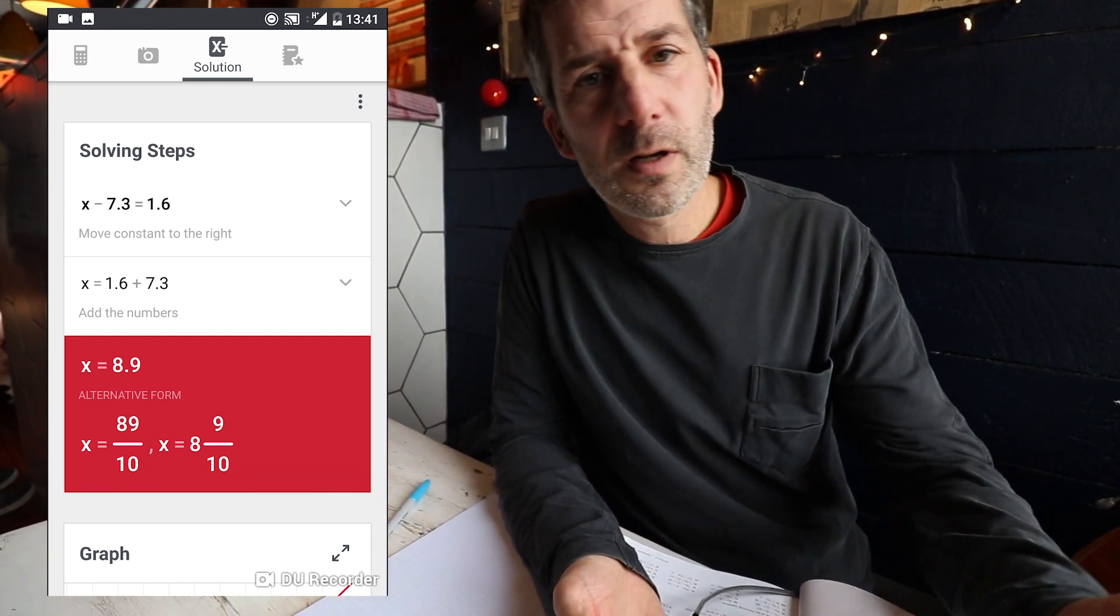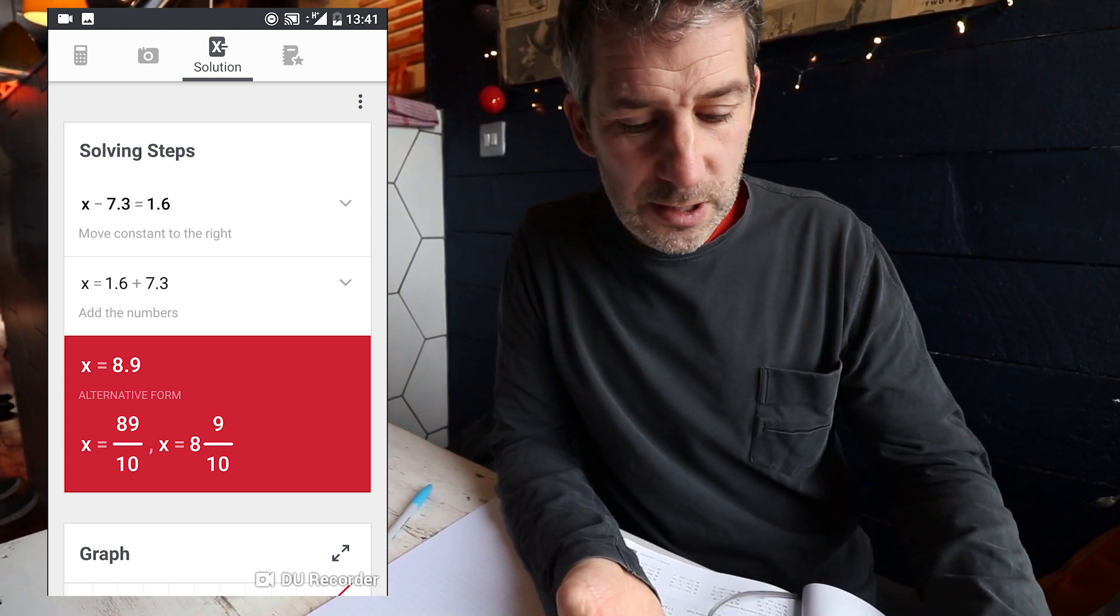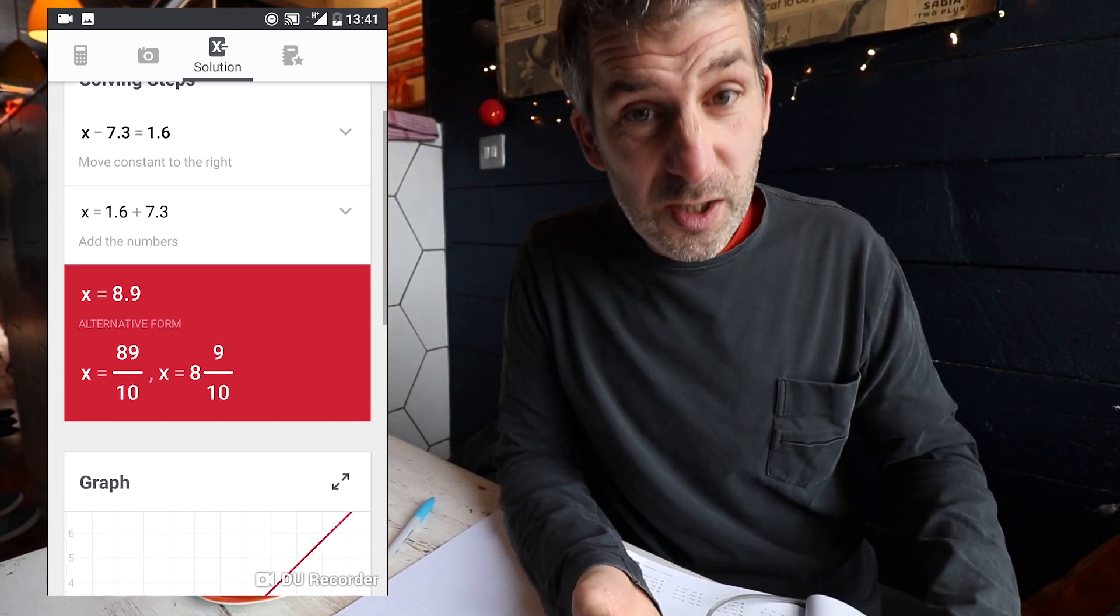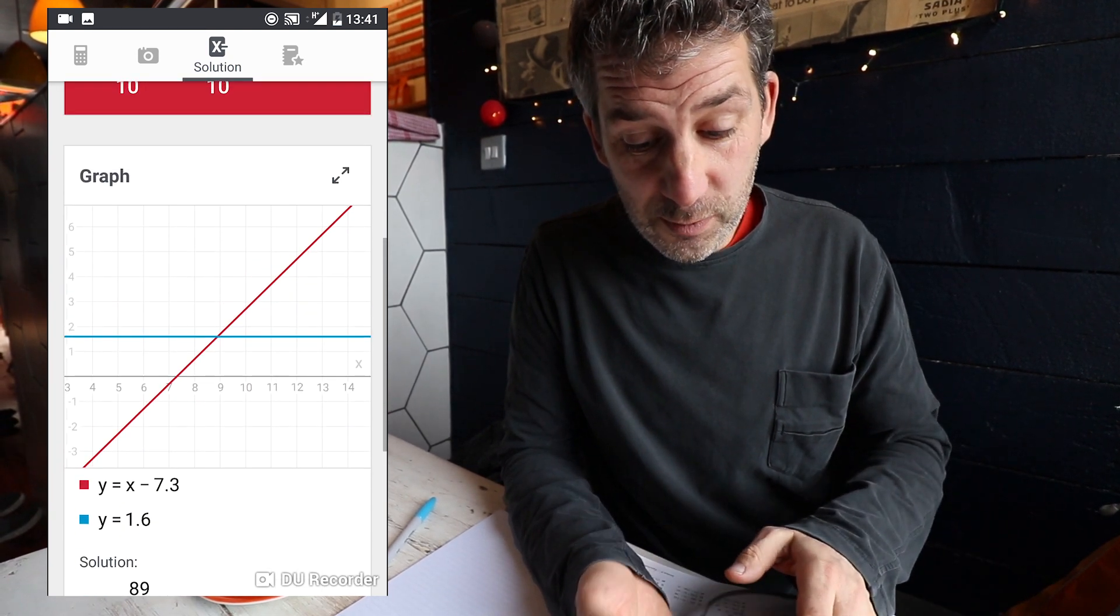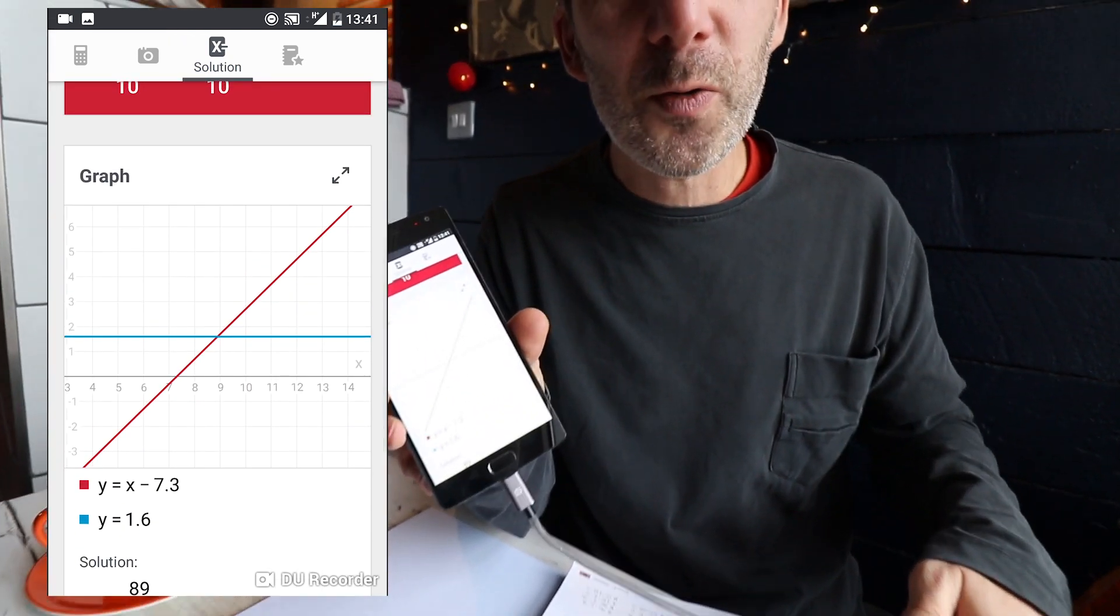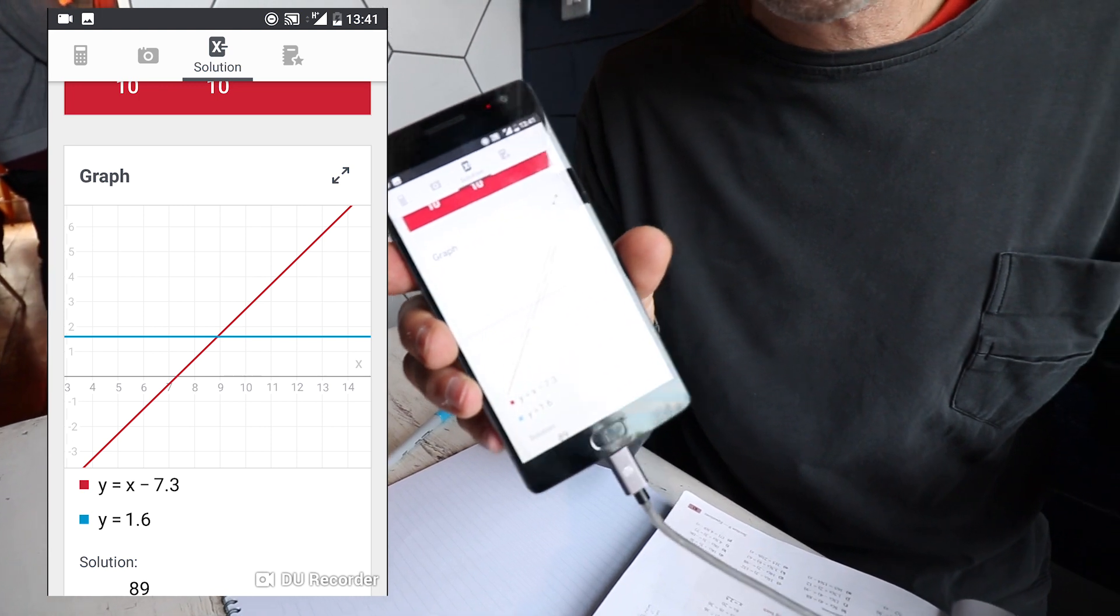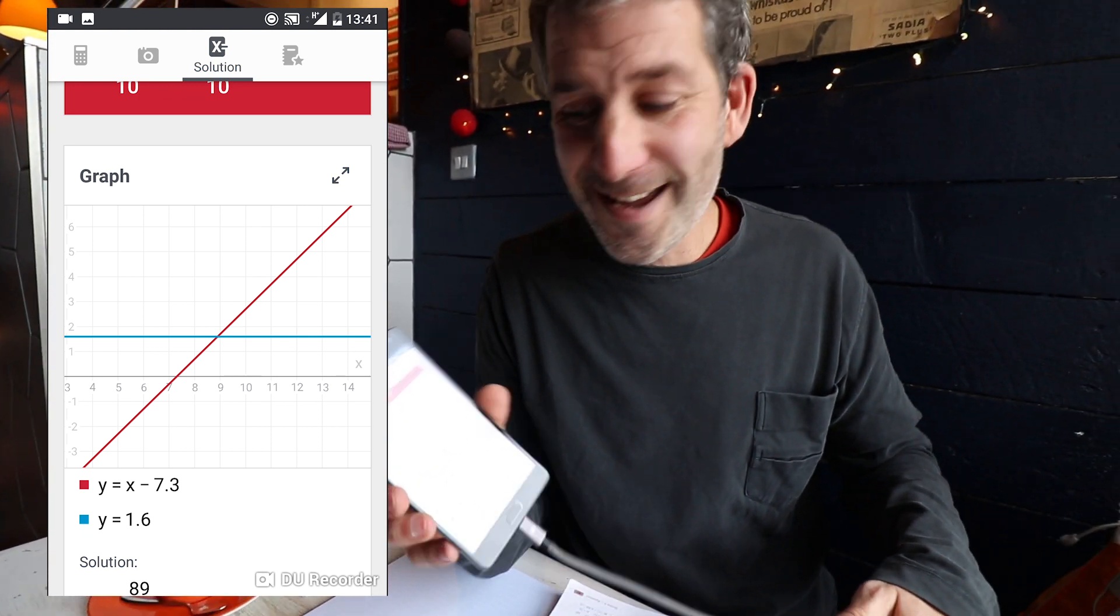Steps aren't always necessarily the way that you would solve it, so they might not make that much sense, but it's pretty good. You can even scroll down. It will show you the graph of what that equation looks like. It's really, I would say, as close to magic as you can get.